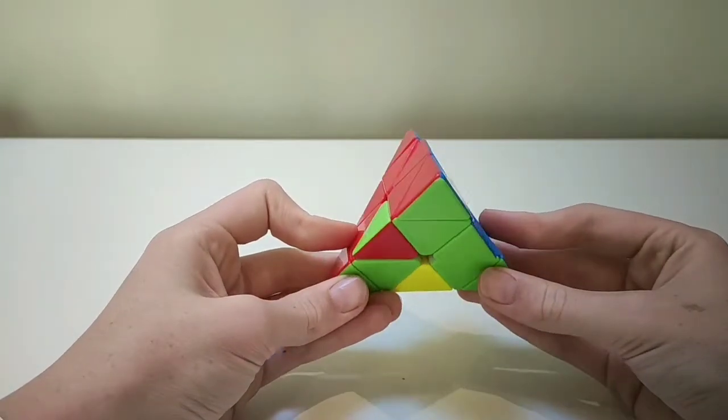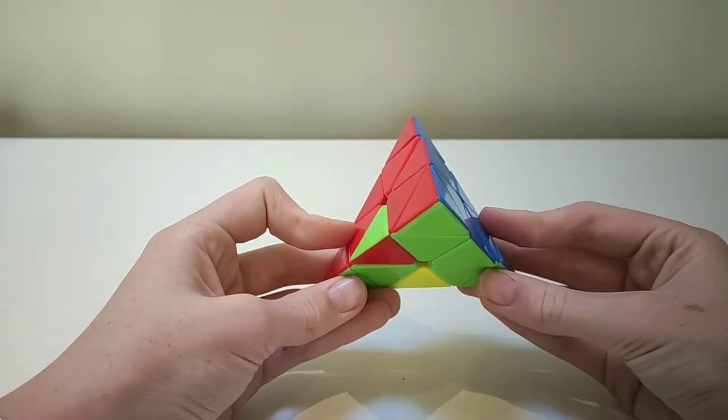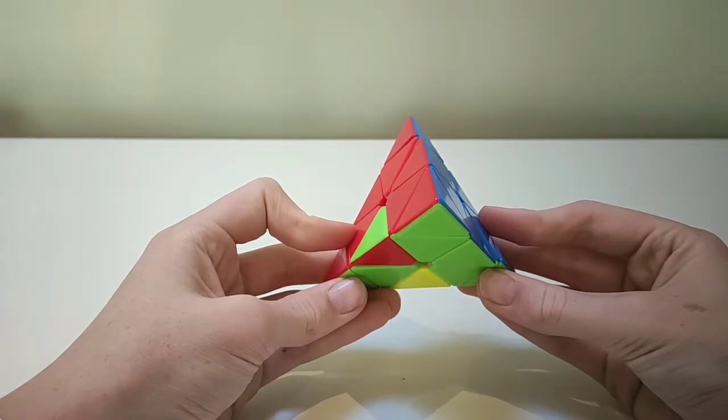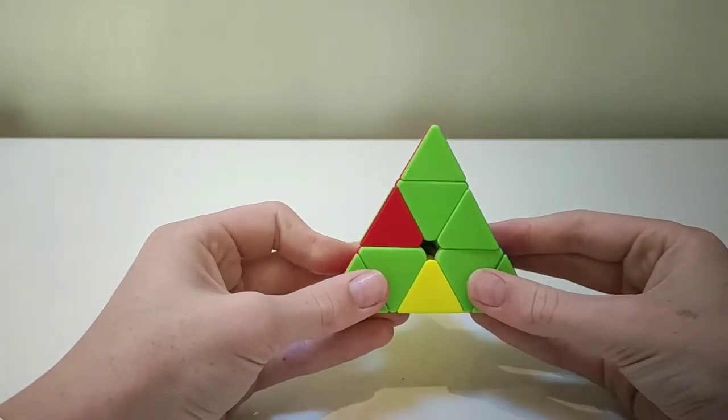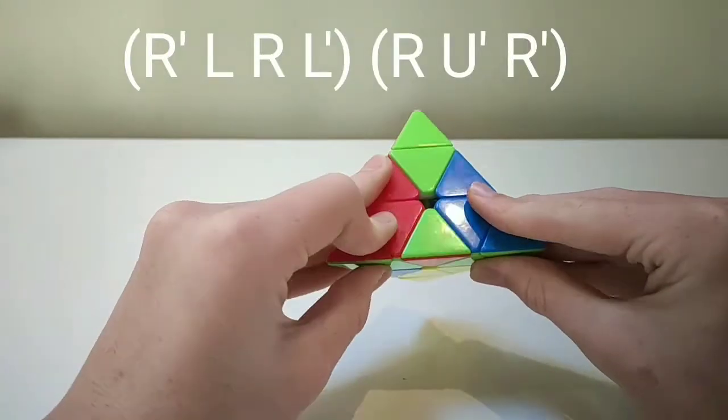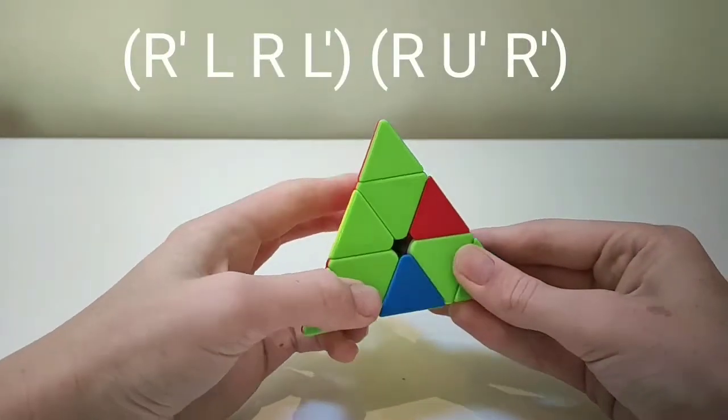This is the sixth case, where one piece in the top layer is flipped and in the right place. The algorithm for this case is R' L R L' R U'.